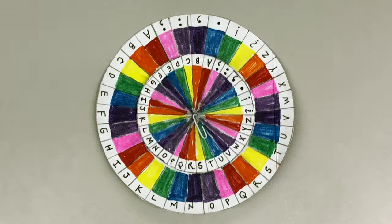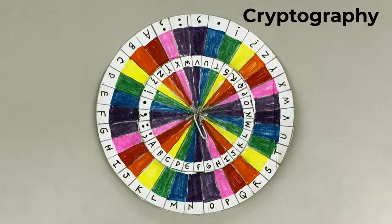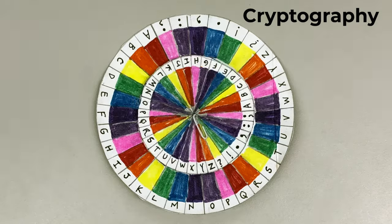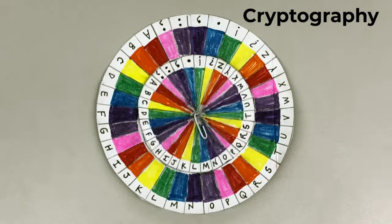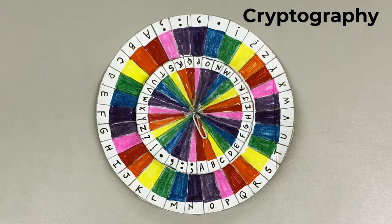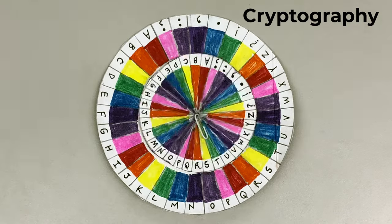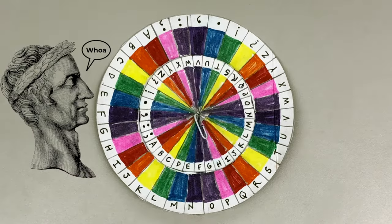A cipher wheel is an ancient form of cryptography that shifts the letters of an alphabet to create a codable language for encrypted and decrypted messages. The earliest known use of a shift cipher was by Julius Caesar to send secret messages to his generals on the battlefield.